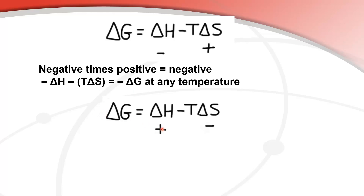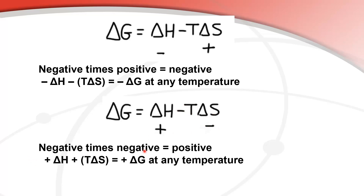In the next equation we have a positive ΔH and a negative ΔS, so that means we have an endothermic reaction with a decrease in entropy. When ΔS is negative, a negative times a negative makes a positive. So we have a positive ΔH plus a positive product of T times ΔS — always a positive ΔG at any temperature. A reaction that is endothermic with a decrease in entropy is non-spontaneous at any temperature.